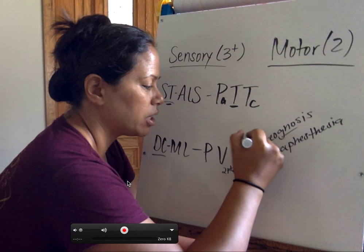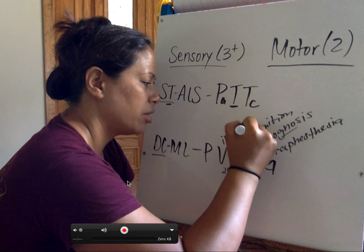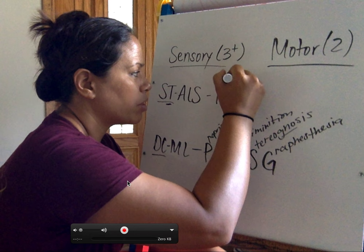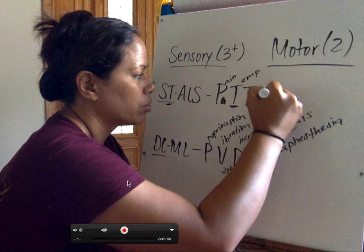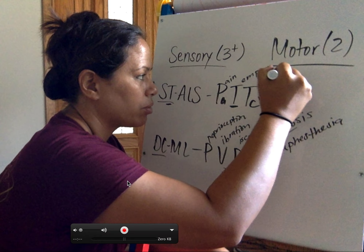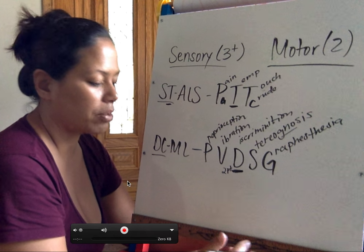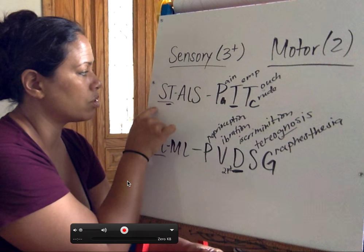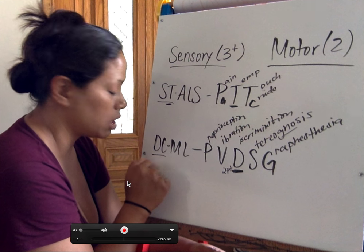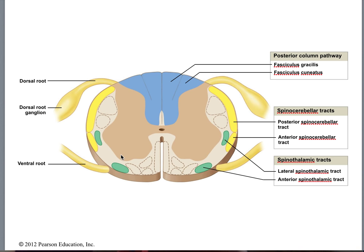So: two-point discrimination — ability to distinguish between two points. Vibration. Proprioception. That was DCML. The spinothalamic was pain, temperature, and crude touch. The pathway for general touch is spinothalamic; the pathway for specifically distinguishing two points is DCML. Memorize those two. We already went through spinal thalamic and posterior column — let's do a refresher.